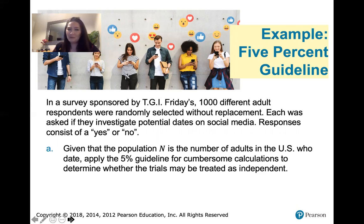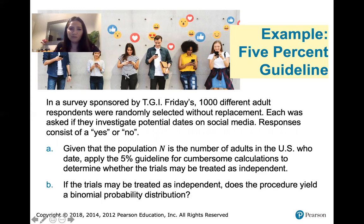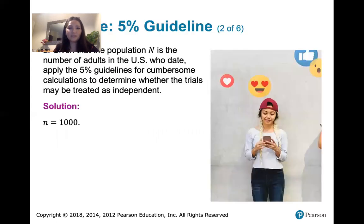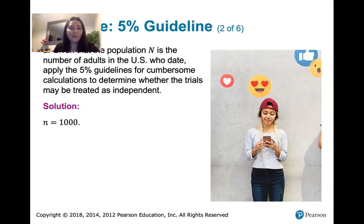We can find that out using the 5% rule. The second part of the question asks: if the trials may be treated as independent, does the procedure yield a binomial probability distribution? For part one: our sample size n equals 1,000. The question is how that 1,000 compares to the population size N — the number of adults in the US who are dating. Let's figure out what N would have to be for 1,000 to be less than or equal to 5% of N.